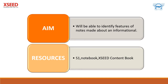Before we start the actual lesson, let's understand the aim and resources. The aim is simple: you will be able to identify features of notes made about an informational text — meaning a text wherein you get information about a particular topic. The resources we require are S1, which is our workbook, notebook, and the Excel content book.